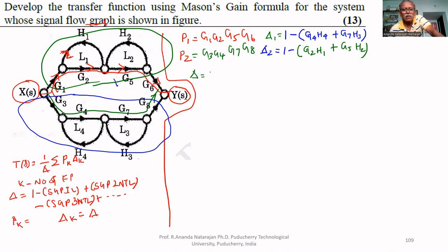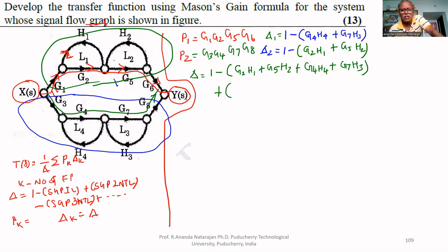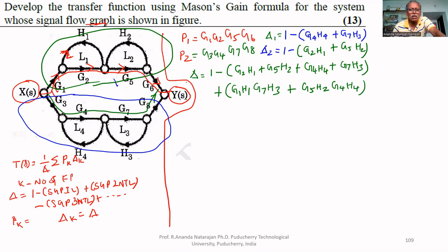Now, what is the overall Δ? Δ = 1 − (g2·h1 + g5·h2 + g4·h4 + g7·h3) from all four individual loops L1, L2, L3, L4. For two non-touching loops: L1 and L3 are not touching, giving g1·h1·g7·h3; and L2 and L4 are not touching, giving g5·h2·g4·h4. There are no three non-touching loops.